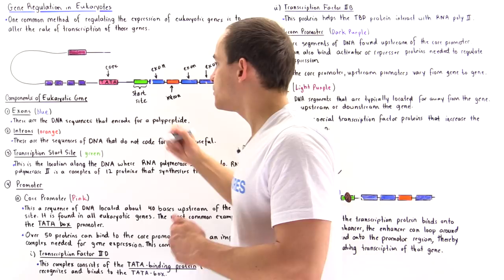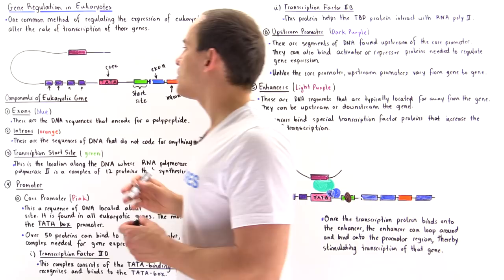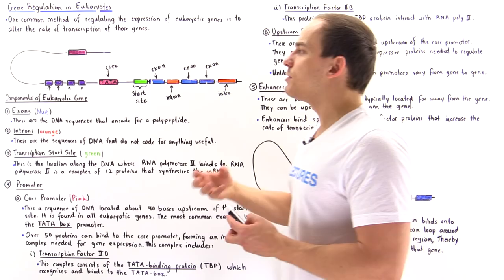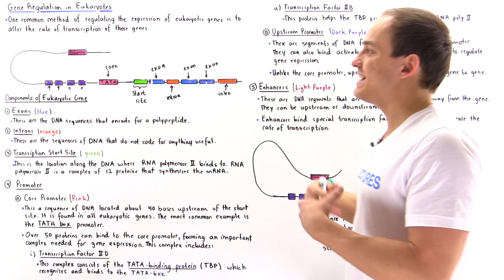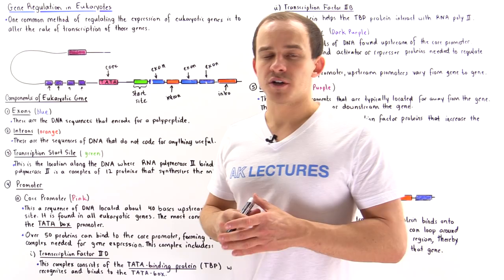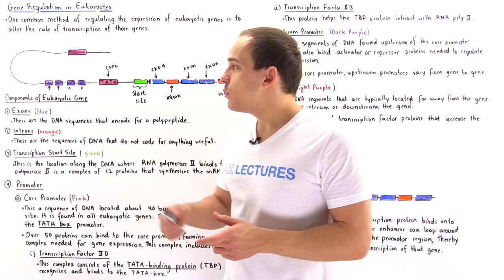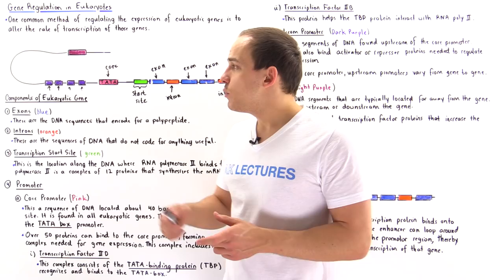The upstream promoters are also segments of DNA that allow the binding of different types of regulatory proteins — they can be proteins that activate transcription or proteins that repress and inhibit transcription. Unlike the core promoter, which doesn't really change across eukaryotic genes, the number and types of upstream promoters do vary between different types of eukaryotic genes.